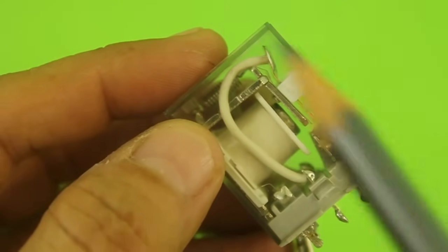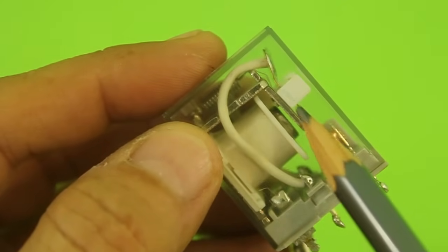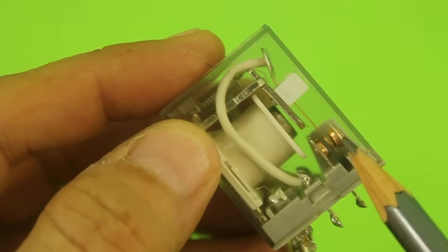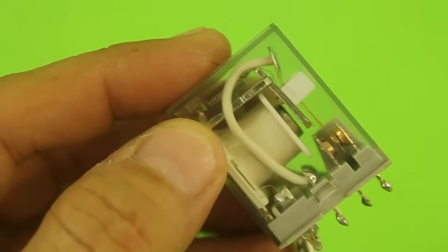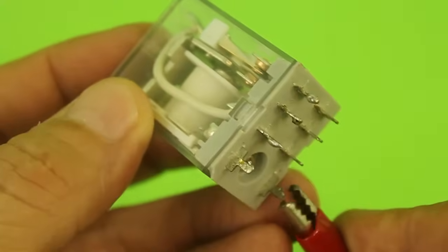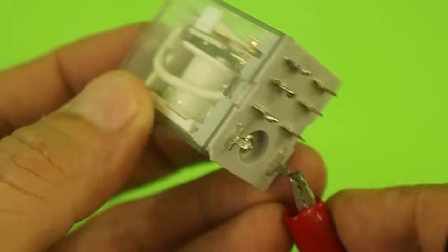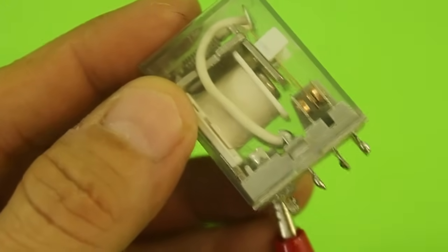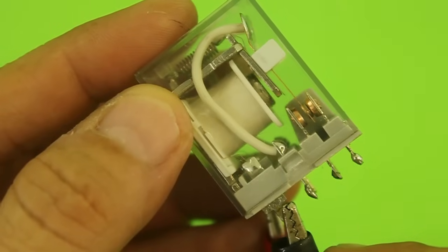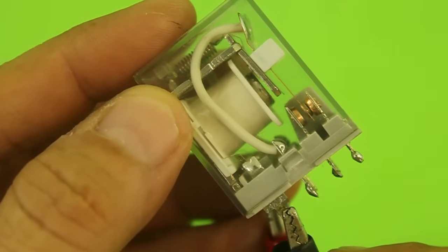Here we can see it. This in the middle is the common contact. It is making contact with one of the pins but not with the other. And when we energize the coil, you can see how it moves from one position to the other.